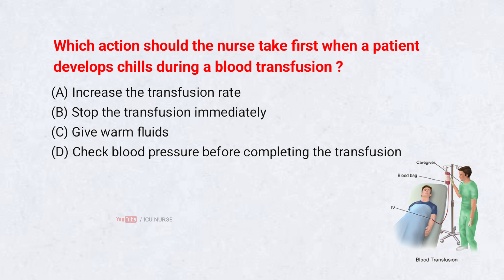Which action should the nurse take first when a patient develops chills during a blood transfusion? A. Increase the transfusion rate. B. Stop the transfusion immediately. C. Give warm fluids. D. Check blood pressure before completing the transfusion. Correct answer: B. Stop the transfusion immediately. Chills during transfusion may indicate a transfusion reaction, and continuing the blood can worsen complications. Stopping is the safest first step.